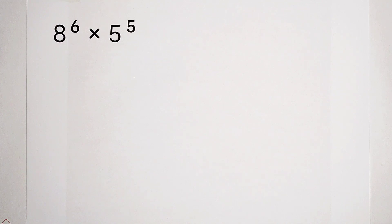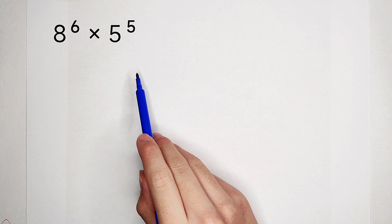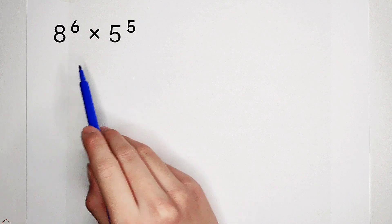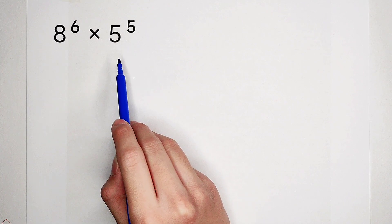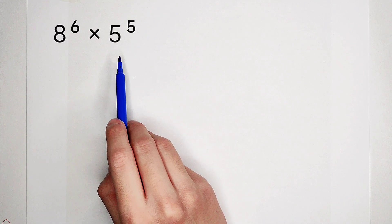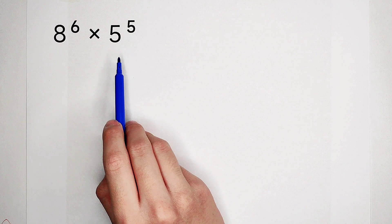Welcome back to Math We Know. Calculate 8 to the power of 6, then times 5 to the power of 5. How should I solve it? Of course, first, by observation.